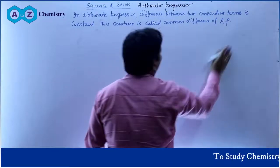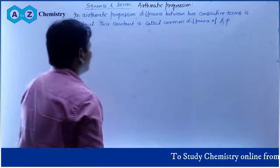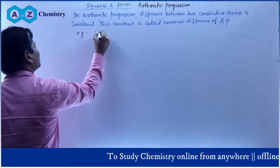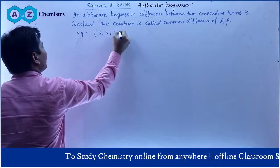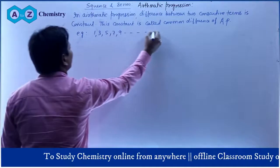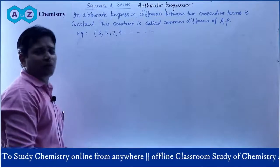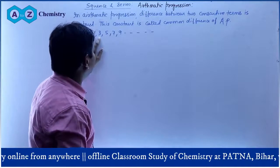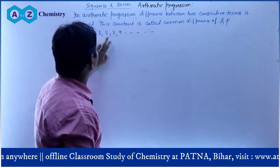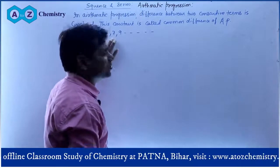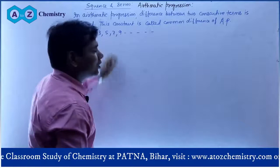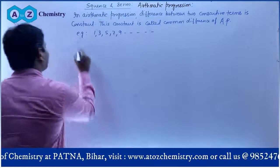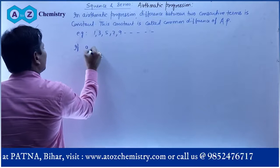For example, if you look at: 1, 3, 5, 7, 9 — these are in arithmetic progression. The common difference: 3 − 1 = 2, 5 − 3 = 2, 7 − 5 = 2, 9 − 7 = 2. This is an arithmetic progression, as you can clearly see. If a₁, a₂, a₃, a₄ up to aₙ are in AP, then remember that a₂ = a₁ + d, where d is the common difference.